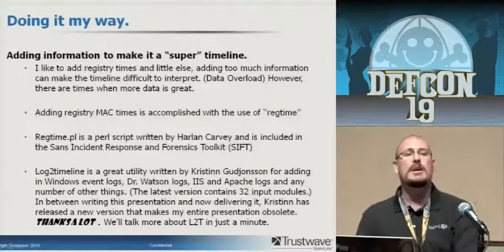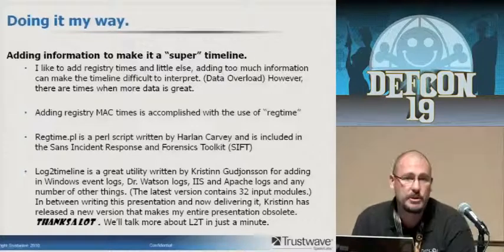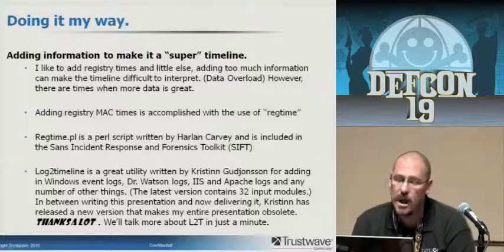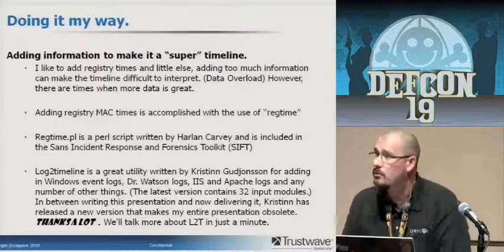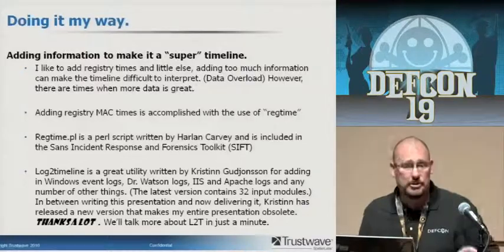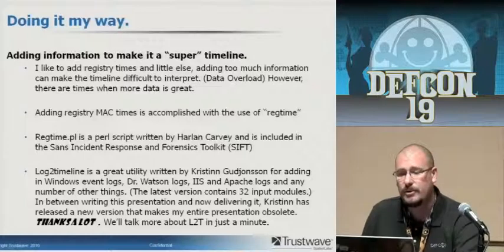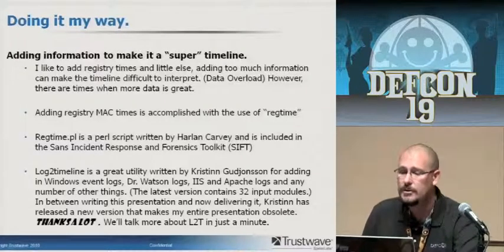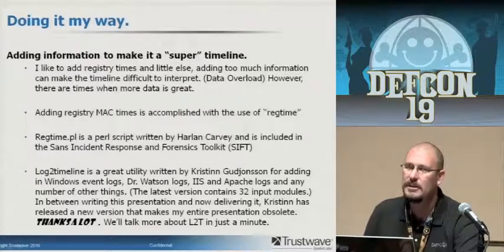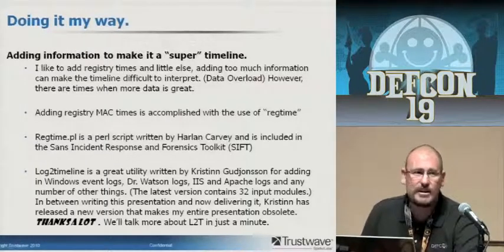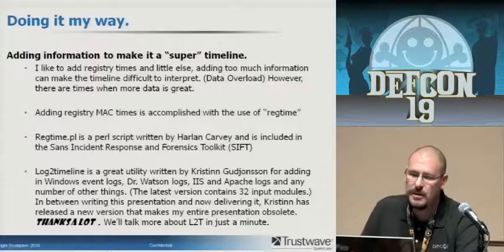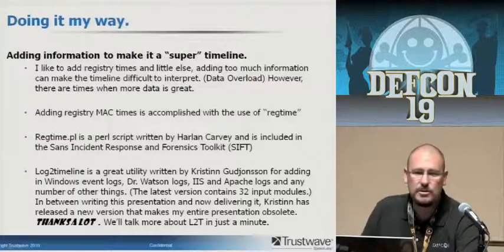There's your standard file system timeline, which can be incredibly useful. But you start adding information to it and you really get a much larger picture of what's going on — call it a super timeline. I like to add the registry times and usually don't add a lot else because you get data overload extremely quickly. That said, sometimes if you're not finding a lot, adding everything can be very useful — use your best judgment.